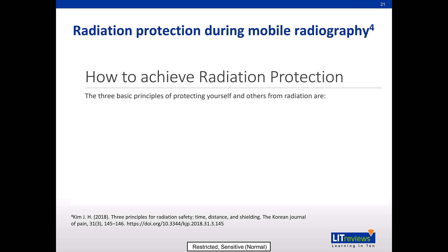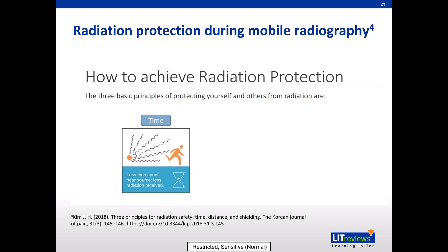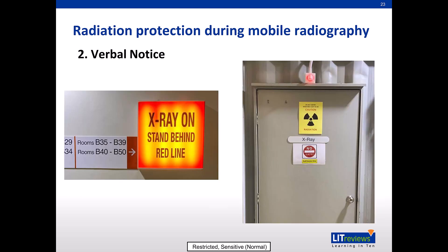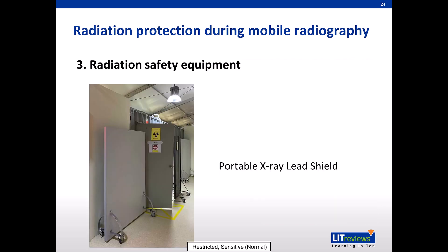There are strategies to maintain radiation protection during mobile radiography. The three fundamental principles are time, distance, and shielding. Before performing mobile radiography, one should ensure that there is no pregnant patient or staff within the room. All visitors must leave the room or ward cubicle before radiation exposure is made. Patients in the same cubicle who are not classified as at risk will be advised to step away before making radiation exposure. Additional portable x-ray lead shields will be utilised to shield nearby patients from unnecessary scattered radiation if the ward is equipped with them.